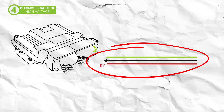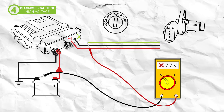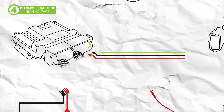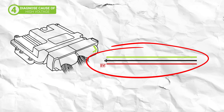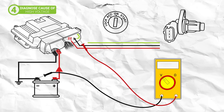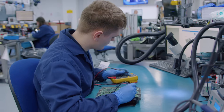To confirm the fault is only present in the loom and not in both the loom and ECU, move the red probe to the ECU connector side of the affected wire. If the correct voltage is displayed here, then you can confirm the fault is only with the loom, which will need to be repaired. If the voltage is still outside the expected range, then there is a short within the ECU, which again will need to be rebuilt.